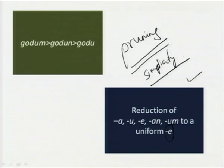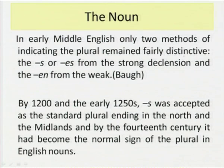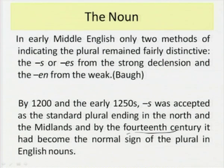A.C. Baugh, whose text 'History of the English Language' is a seminal work, says that in early Middle English only two methods of indicating the plural remained fairly distinctive: the ending '-s' or '-es' from the strong declension and '-en' from the weak. By 1200 and the early 1250s, the '-s' ending was accepted as the standard plural ending in the north and the midlands, and by the fourteenth century it had become the normal sign of the plural in English nouns. With the loss of other inflections, things were streamlined.